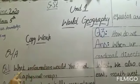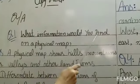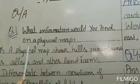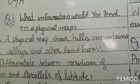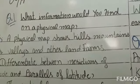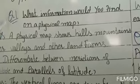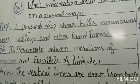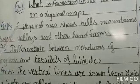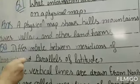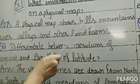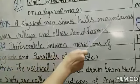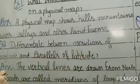Question number 1: What information would you find on a physical map? The physical map shows hills, mountains, rivers, valleys, and other landforms.